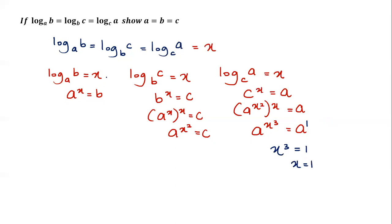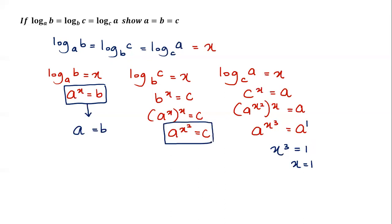Since x = 1, we substitute back. From a^x = b with x = 1: a^1 = b, so a = b. From a^(x²) = c with x = 1: a^1 = c, so a = c. Therefore a = b = c is shown.